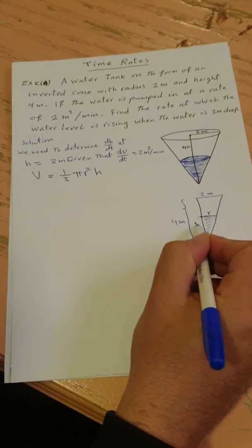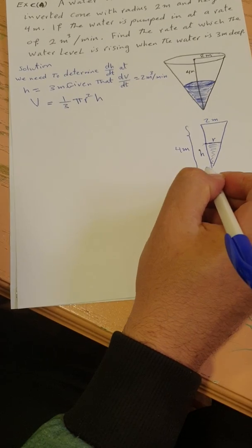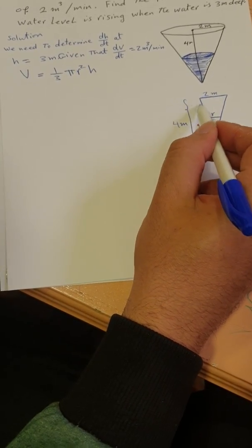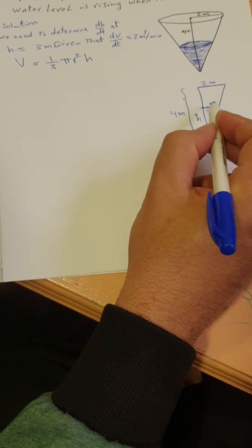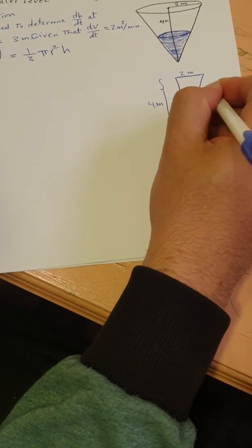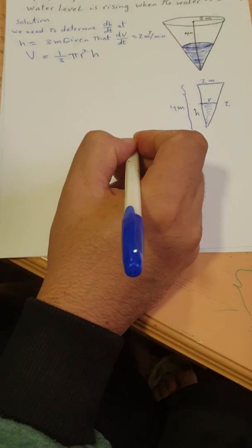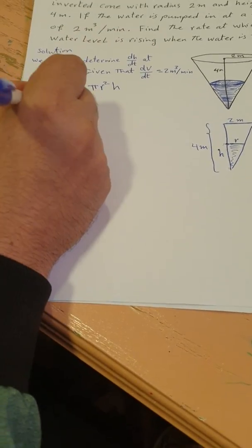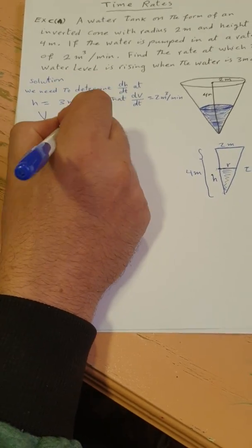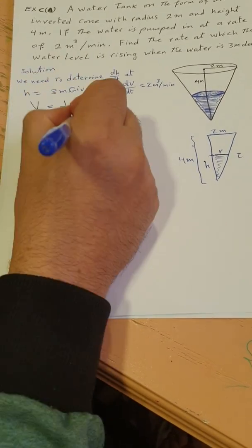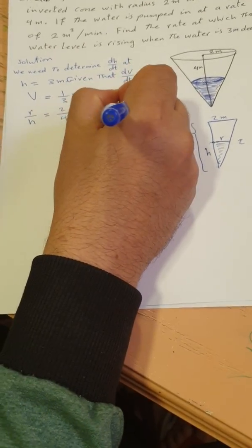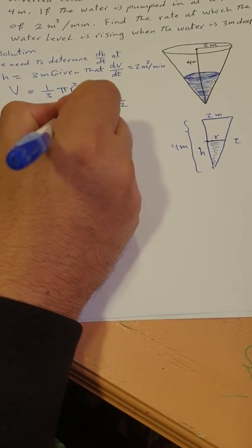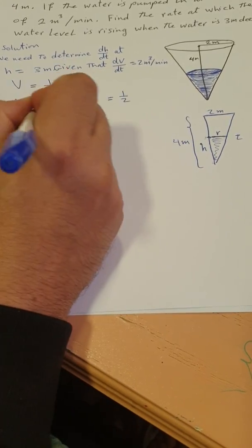The radius and height are both changing with time. From the geometry of this triangle, we have the radius of the cone equals two meters and the total height of the cone equals four meters. At time t, the radius is r and the height is h. From the geometry of this triangle we have r over h equals two over four, which implies r equals h over 2.